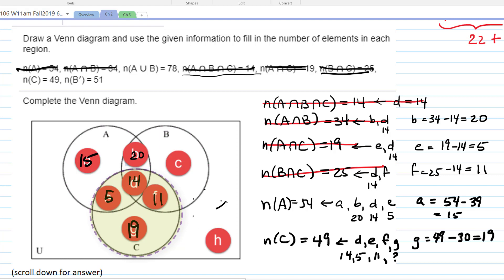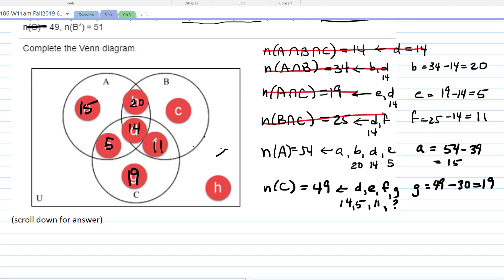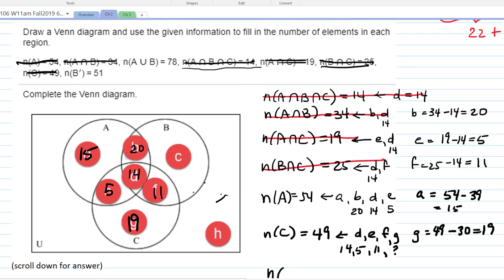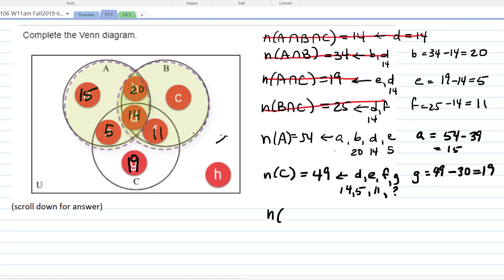And then we're only missing regions C and H. So let's see. Crossing that one off. How about the number that are in, what can we use? A union B is 78. Is that helpful? Yeah, because we know everything in A union B except for one thing, right? What's the only thing that we're missing from A union B? C.